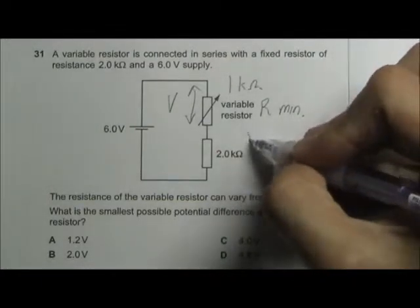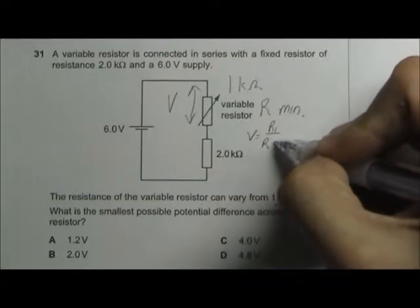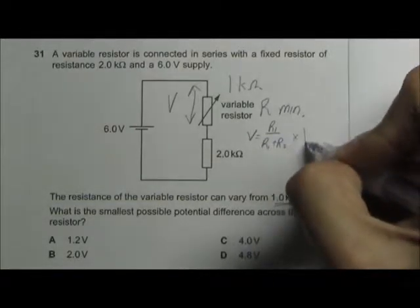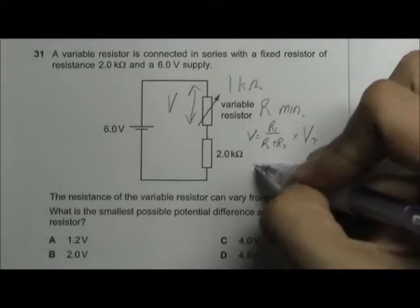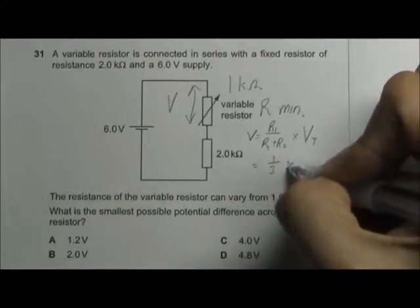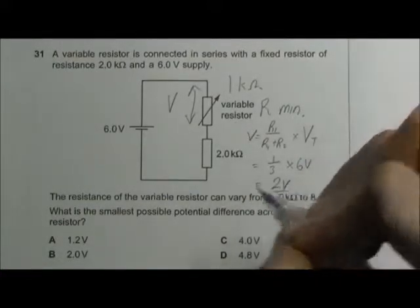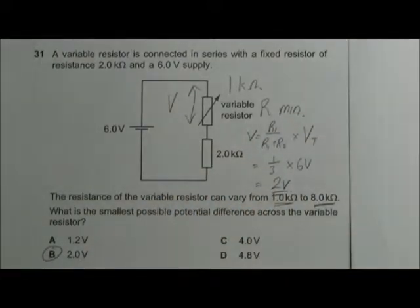This will be 1 divided by 1 plus 2, which is 3, multiplied by 6 volts. You will get 2 volts, answer B.